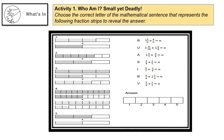Count the number of rectangles in each item — that count becomes the denominator. For example, in number 1 there are four rectangles, so 4 is the denominator, the number on the bottom. Then count how many rectangles are shaded — that becomes the numerator, the number on top.